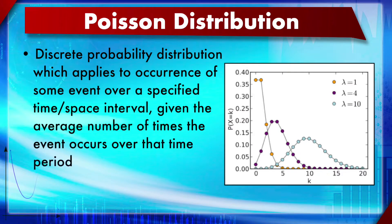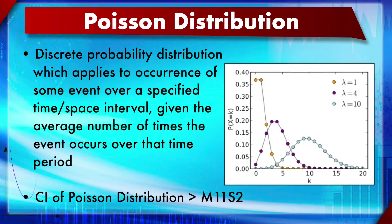The next distribution is the Poisson distribution, named after the famous statistician Poisson. It is a discrete probability distribution which applies to the occurrence of some event over a specified time or space interval, given the average number of times the event occurs over that time period. This is useful when there is an average event happening in a particular time, such as averages per day calculated over a week or month. Unlike binomial, the outcome is not restricted to just two results - it can be many. The confidence interval of the Poisson distribution can be calculated using 1.96 in the formula, as discussed in module 11, section 2.